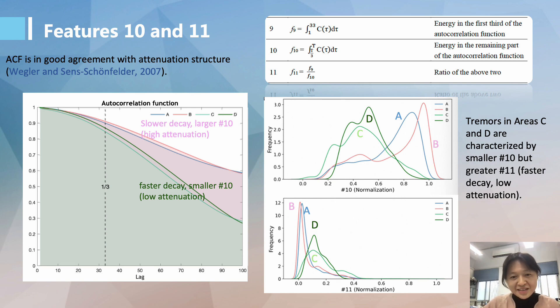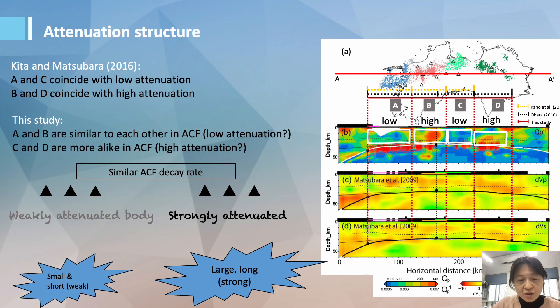However, this interpretation is not consistent with the attenuation structure proposed by Kita and Matsubara in 2016, which shows that area A and C coincide with low attenuation, whereas B and D coincide with high attenuation. To reconcile the two models, we argue that the size of tremor zone may play a role.